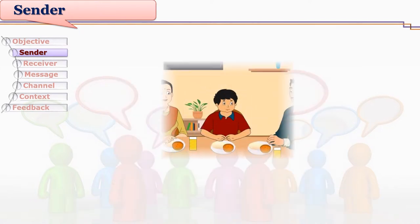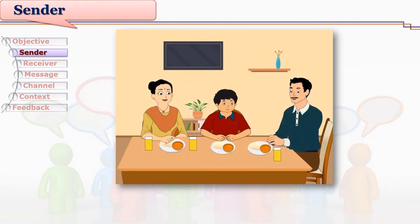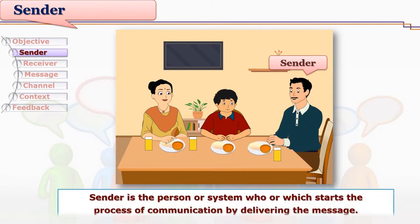When Raghav's exams are approaching and his father wishes to make him realize this and focus on studies, he initiates a discussion over dinner. We can clearly see that the father is the person who has started the dialogue over dinner. So the father is sending messages to Raghav — here, father becomes the sender.